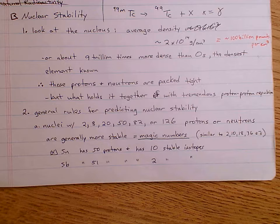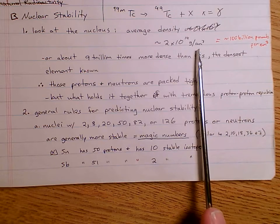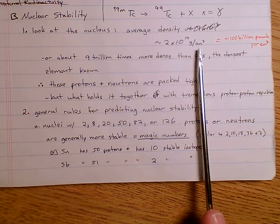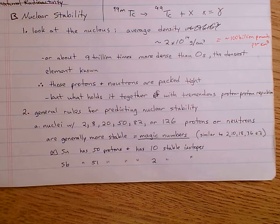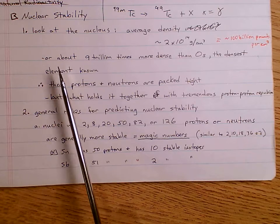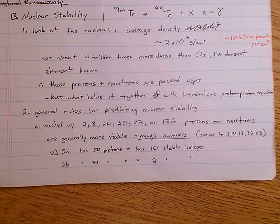1 kilogram is about 2.2 pounds, so this is like 8 times 10 to the 11th pounds. A billion is 8 times 10 to the 9th, so 8 times 10 to the 11th would be about 0.4 trillion pounds — that's 1 milliliter of a nucleus weighing about 4.4 trillion pounds, or about 100 billion pounds per cubic centimeter. That's about 9 trillion times more dense than osmium, the densest element known. Those nuclei are very, very small — protons and neutrons packed together really tight — but that gives us a problem.